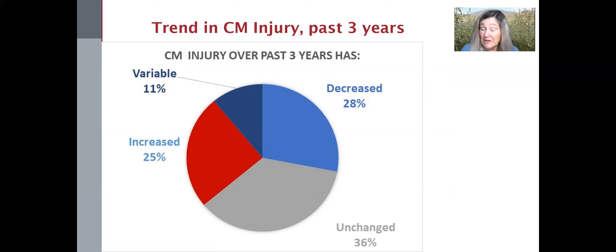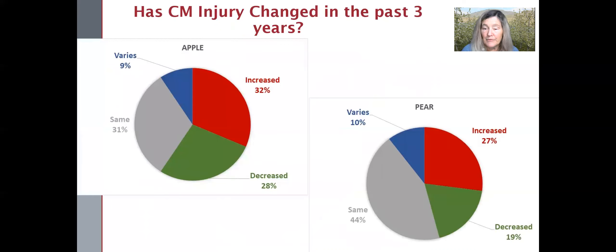So there is an indication we do need to keep paying attention to this, but it's not the three-alarm fire that we thought it was. We broke out the trend data by apple and pear, and surprisingly there was not much difference between the two. The problem is similar apparently in both crops.